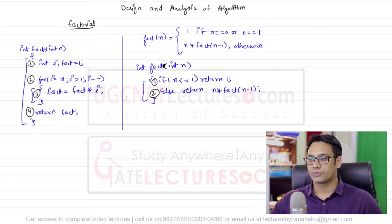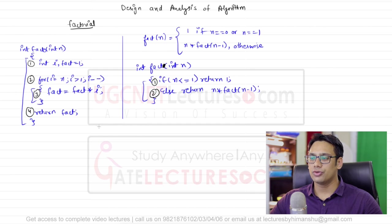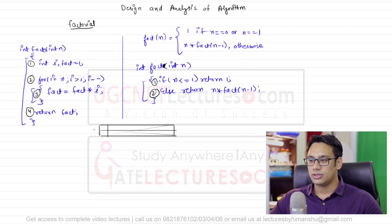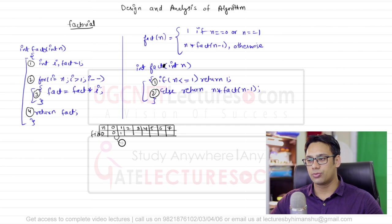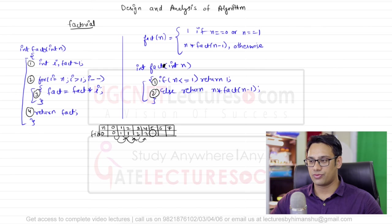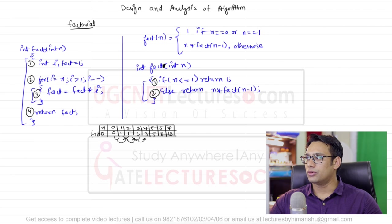Let me also introduce another example: finding the Fibonacci of a number. The mathematical definition is: Fibonacci(0) = 0, Fibonacci(1) = 1, and each subsequent number is the sum of the last two. So Fibonacci(2) = 1, Fibonacci(3) = 2, Fibonacci(4) = 3, Fibonacci(5) = 5, Fibonacci(6) = 8, Fibonacci(7) = 13.